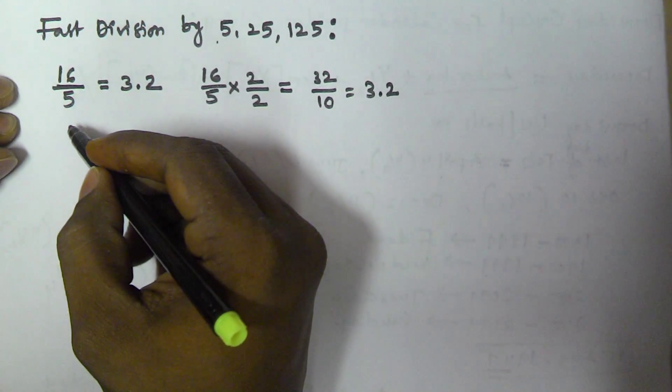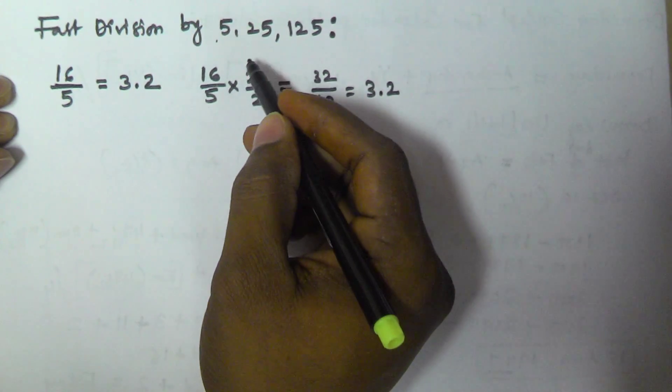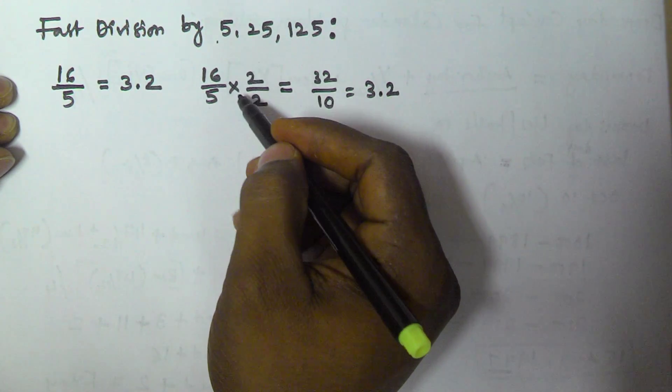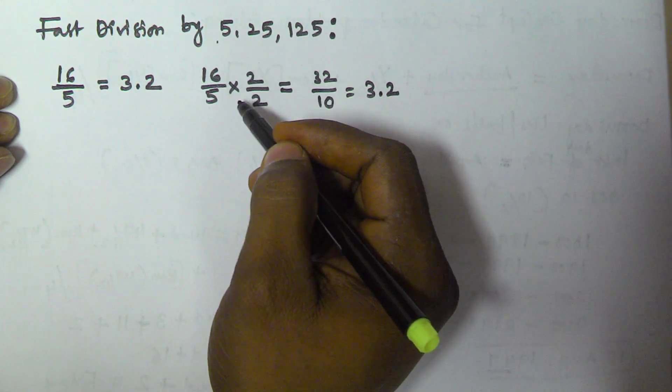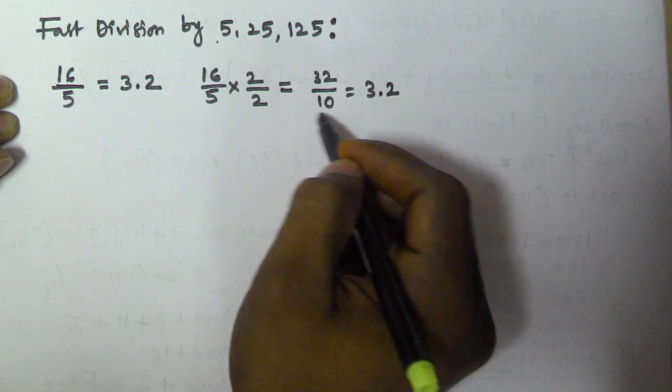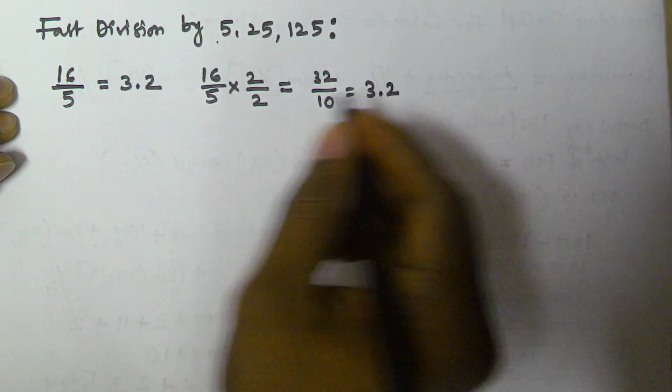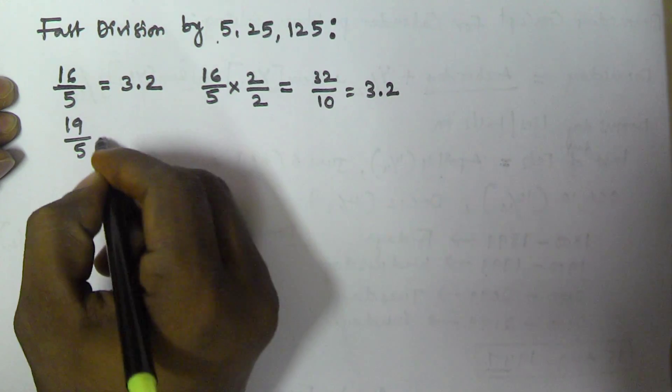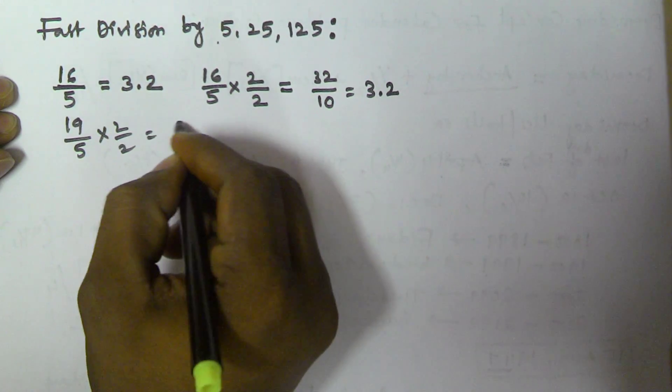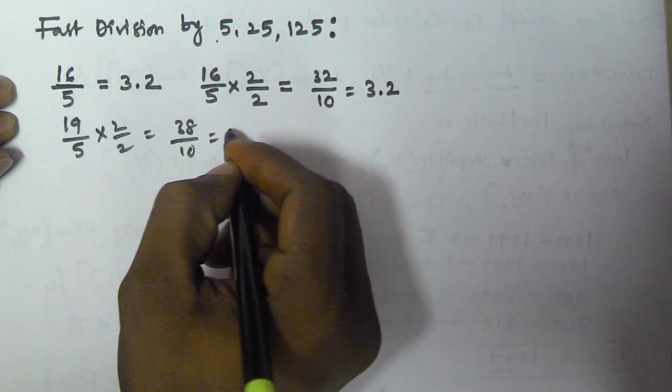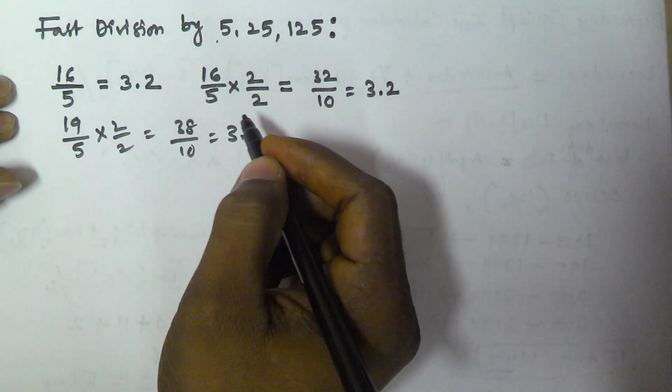Whenever you are dividing a number by 5, simply multiply the numerator and denominator by 2. This makes your division very easy. Now let's find 19 by 5: that's 38 by 10, which equals 3.8.